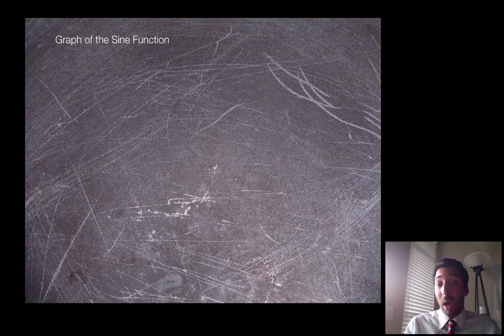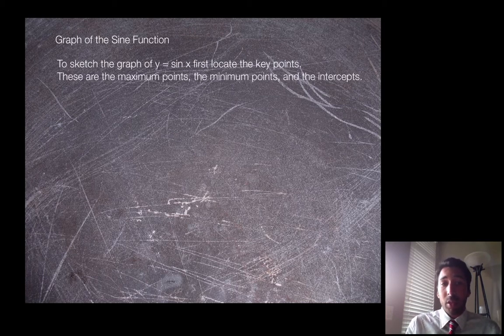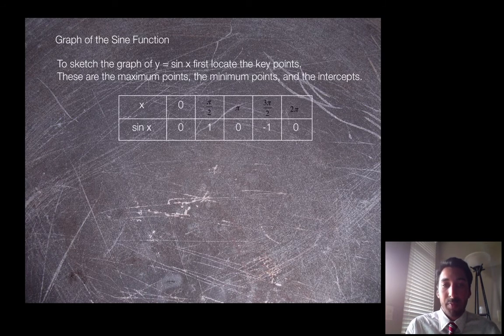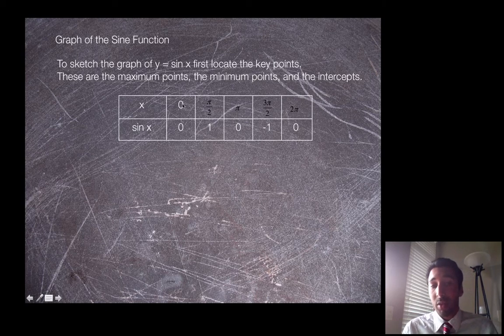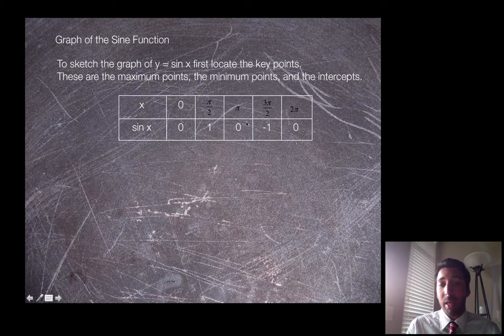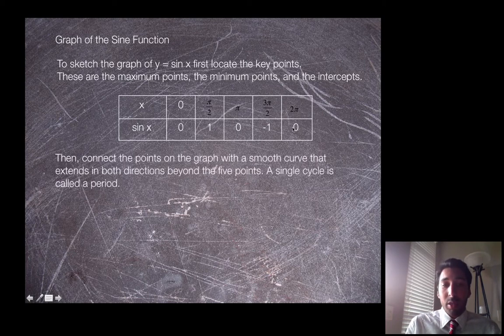All right, so this is what the graph of the sine function looks like. After you've filled in those points, we're going to look at some key points and some intersects. You should have gotten: when theta was 0, sine was 0. We found pi over 2 was 1. If you plug in sine of pi, it's 0. Sine of 3 pi over 2 is negative 1, and 2 pi is 0.